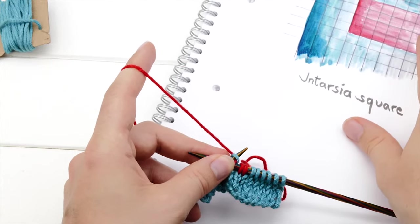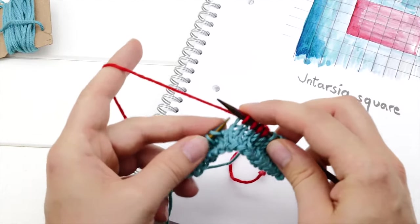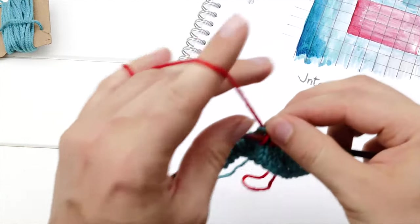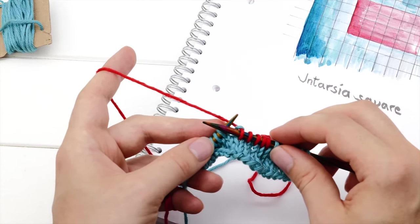And then I continue knitting. My chart tells me to knit one, two, three, four, five, six stitches in red. So I'm knitting five stitches here. And now it's time to join in the next color.